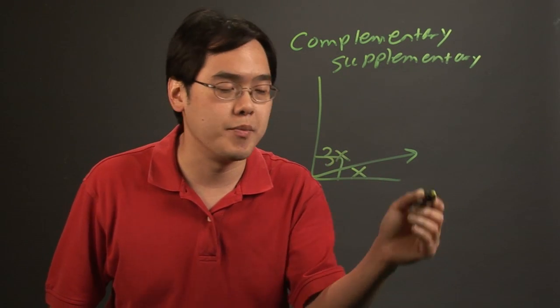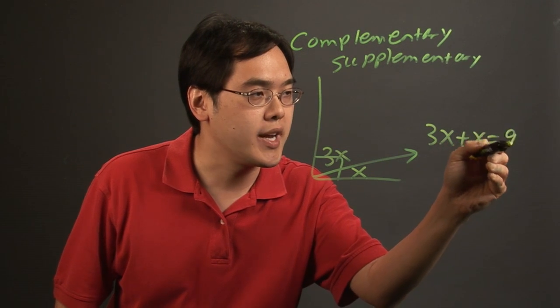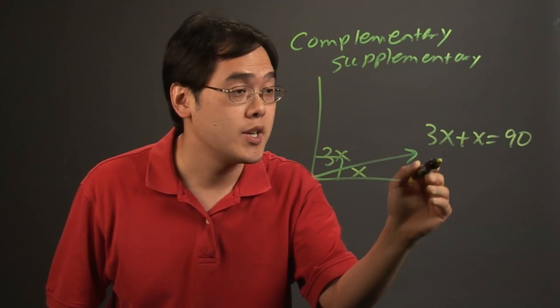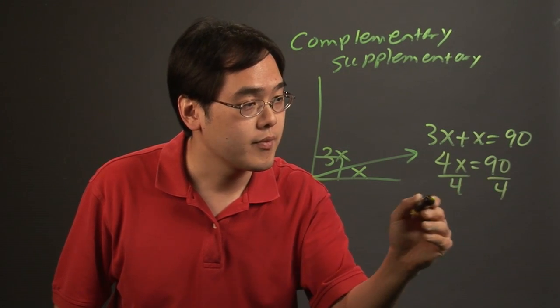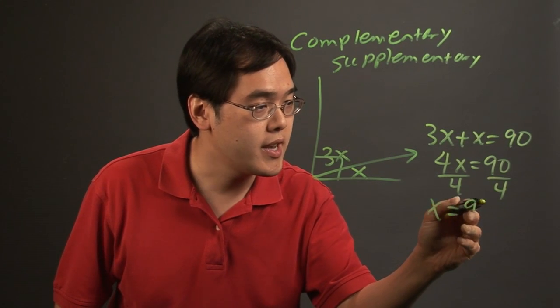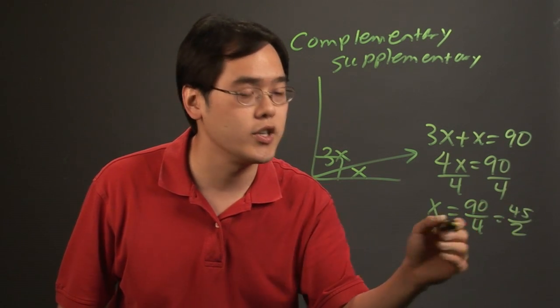So a typical equation would be 3x plus x equals 90 degrees and what you want to do is solve for x. So you have 4x is equal to 90, divided by 4, so x is going to equal 90 over 4 which reduces to 45 over 2 or 22 and a half.